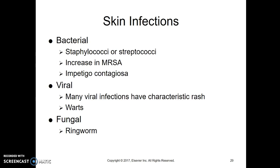Skin infections can have different causative agents. Some are bacterial — the most common are staph and strep. We all have lots of staph and strep on our skin, and our skin, if it's intact, prevents it from getting under the skin and multiplying. MRSA is becoming quite a problem. It started out just in the hospital, and now it's out there. Kids will get skin infections or sub-Q infections with MRSA, and it very often makes an abscess — that pocket of pus that has to be drained out.